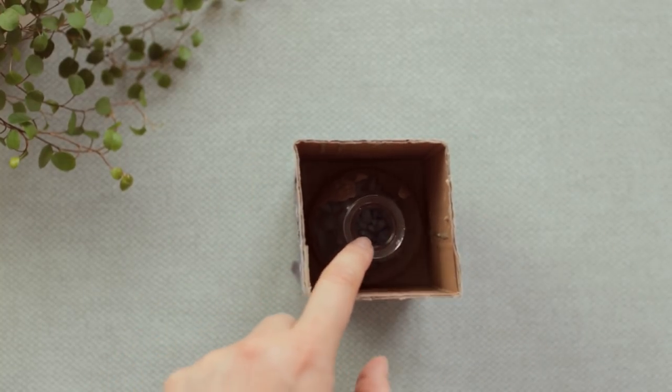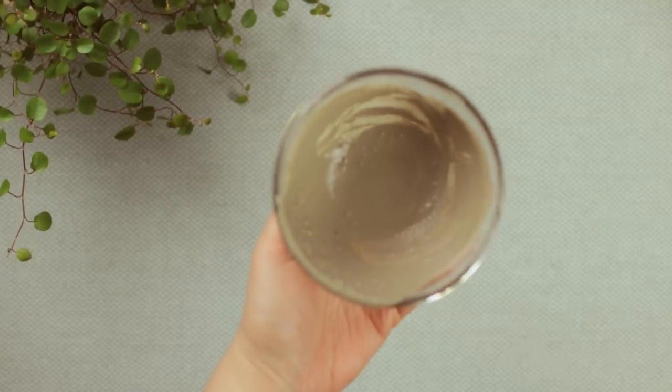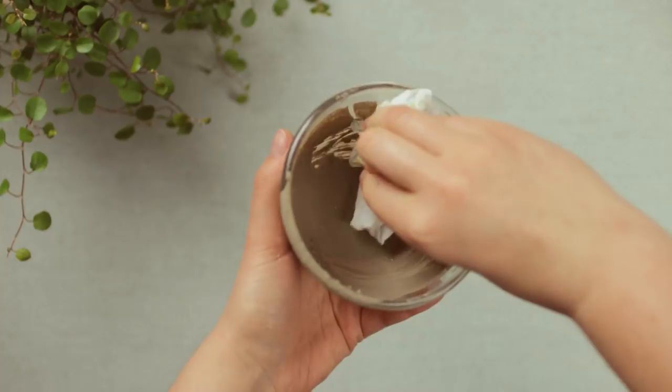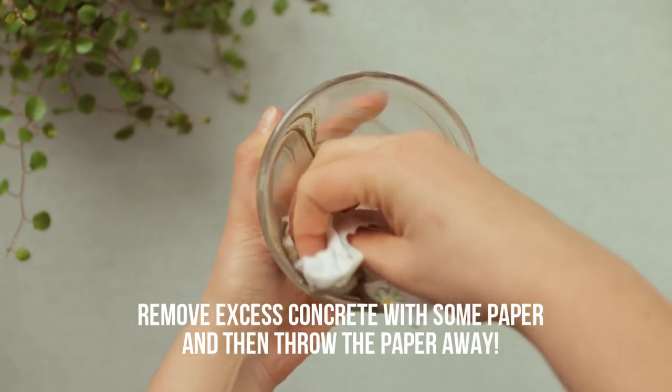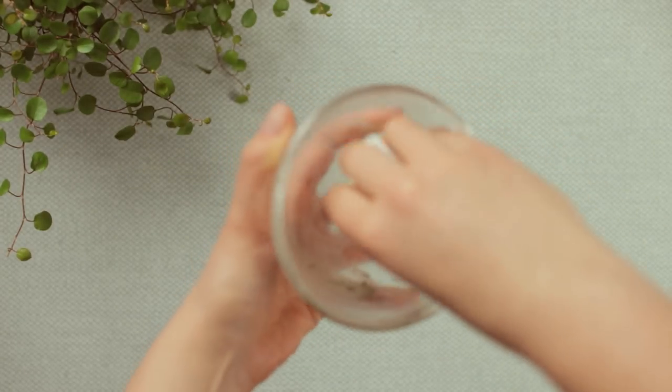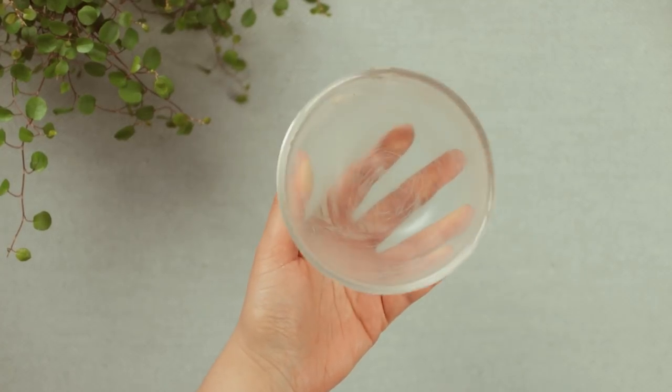By the way, before you clean the bowls you use for the concrete, make sure you remove as much concrete as possible using some paper and then throw it away. You don't want to clean the bowls just like that in the sink and then clog the pipes in your house. But if you have some old plastic containers you don't need, you can just use those instead and then throw them away.